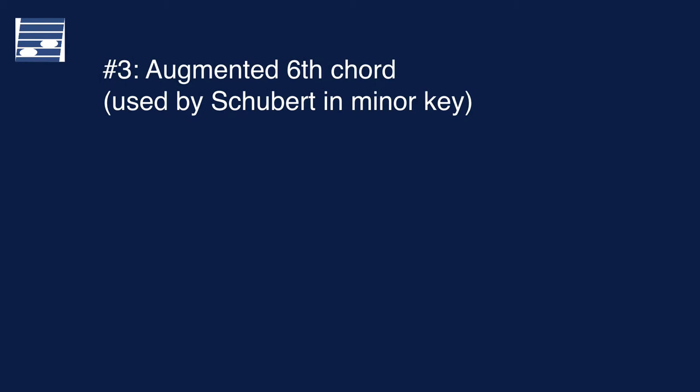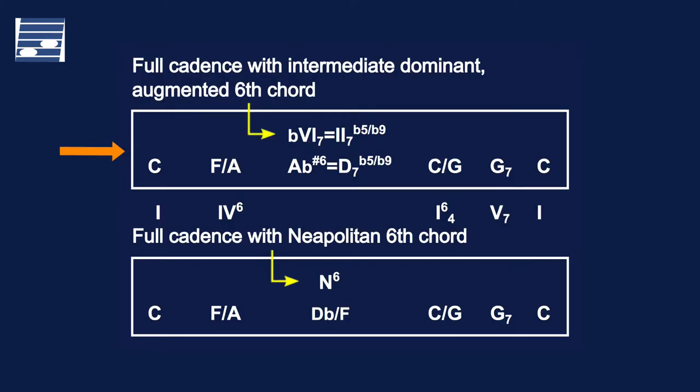Another type of intermediate dominant chord is the augmented 6th chord, used twice by Schubert in a minor key. The typical augmented 6th chord in a major key cadence is shown here in diagram. Again, we note the equivalence with the secondary dominant chord on either the lowered 6th degree, the sub-median, or on the supertonic degree — now a D7b5b9 chord, again with root omitted. In fact, there are three forms of the augmented 6th chord that we will not discuss here however.